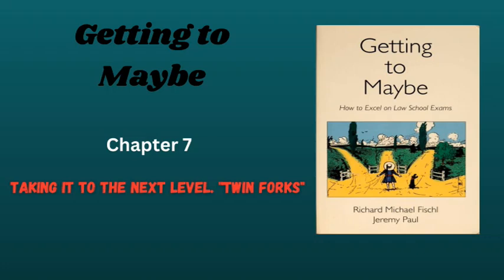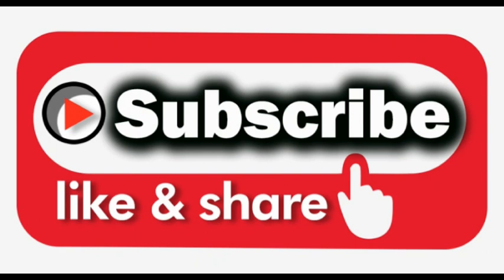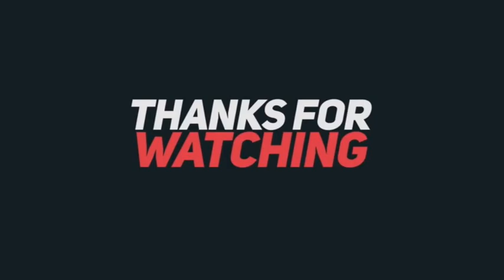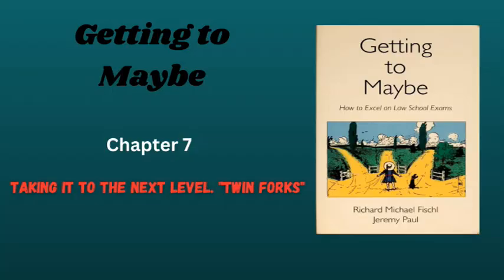Chapter 7: Taking It to the Next Level — Twin Forks. Take a deep breath. You have now read through an extraordinary number of ways in which the law produces ambiguous situations that will provide ammunition for your professors to construct exams. Our experience has been that most law students actually become quite good at mastering the forms of ambiguity we have described. Some get there sooner than others, and so one thing you want to do is develop study techniques that speed your ability to spot exam issues.